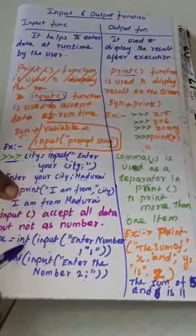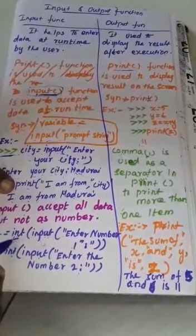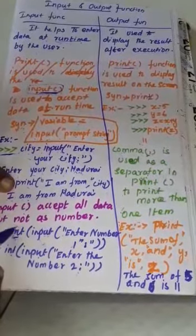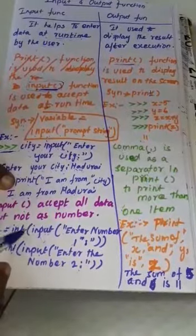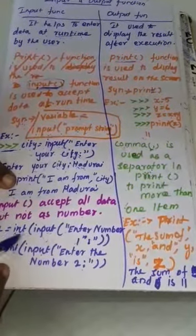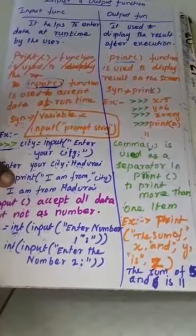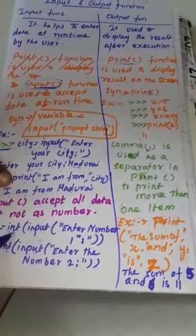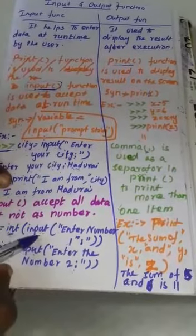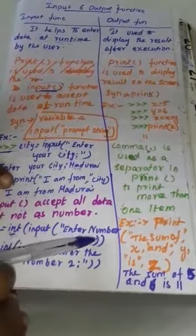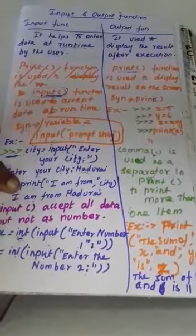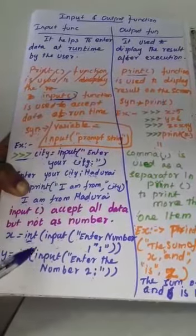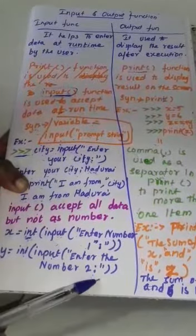x equal to int. Int is an integer value. If you want to type numeric values, you use the int keyword. Here, let us see, x equal to int, next, input function, next, enter number 1. Next, y equal to int, input, enter the number 2.